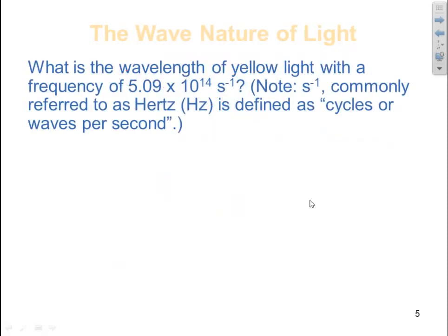Let's look at an example. What is the wavelength of yellow light with a frequency of 5.09 times 10 to the 14th seconds minus 1? Make sure you realize that seconds minus 1 could have just as well been written as Hertz, which means cycles of waves per second.